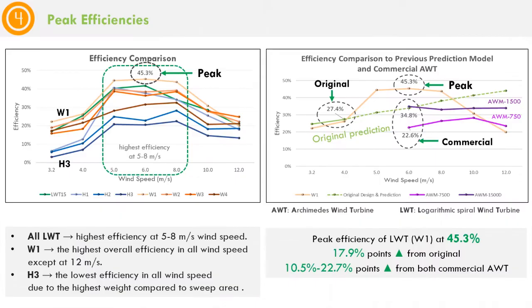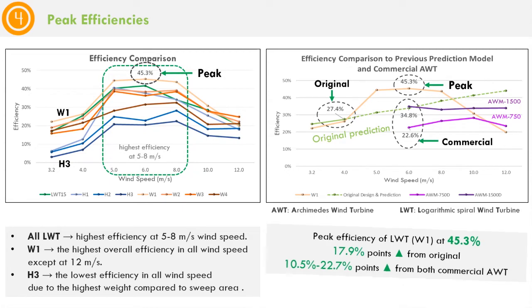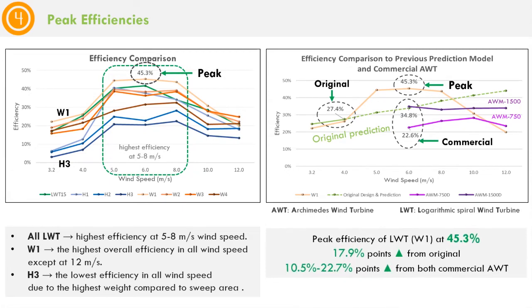Number four, peak efficiencies. All turbines peaked at 5-8 meters per second, where W1 was the best performing and H3 was the worst. The peak efficiency is at 45.3%, 17.9% higher than my original and 10.5% to 22.7% higher than both commercial Archimedes wind turbines. However, it drops afterwards, possibly due to a lack of variable speed gearbox.